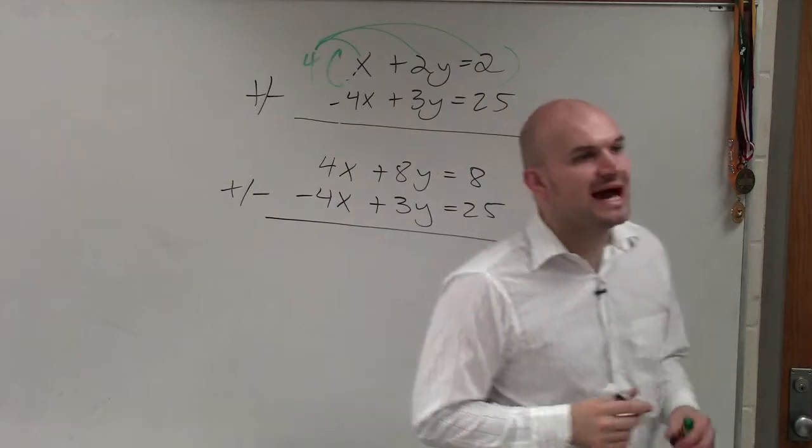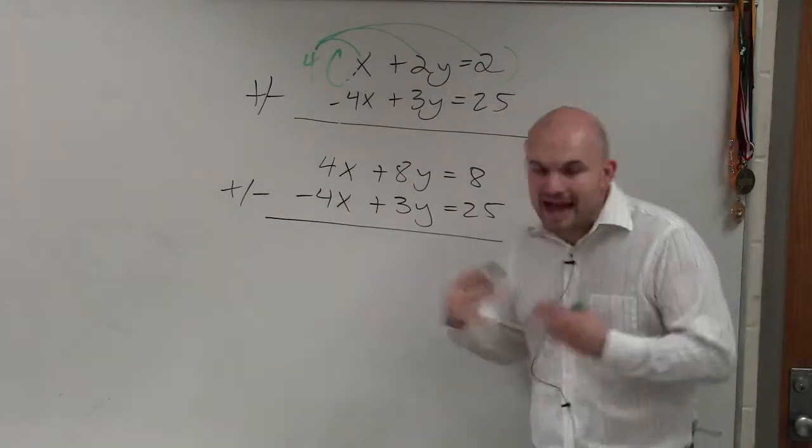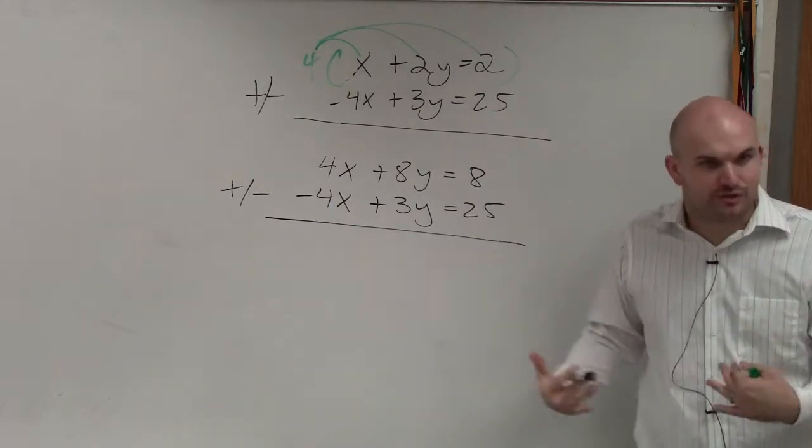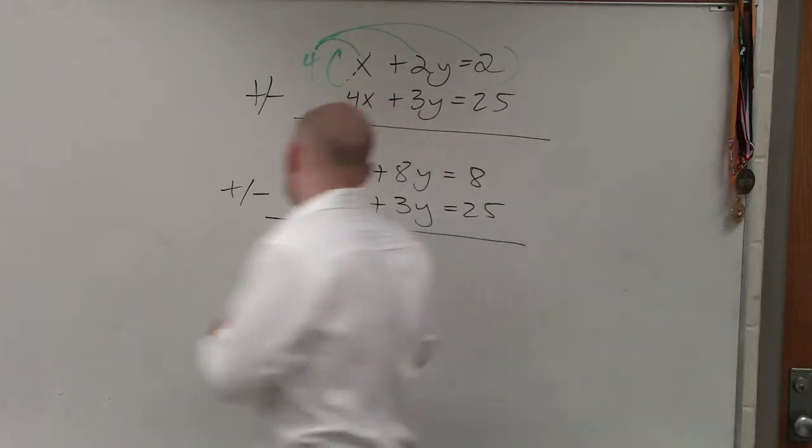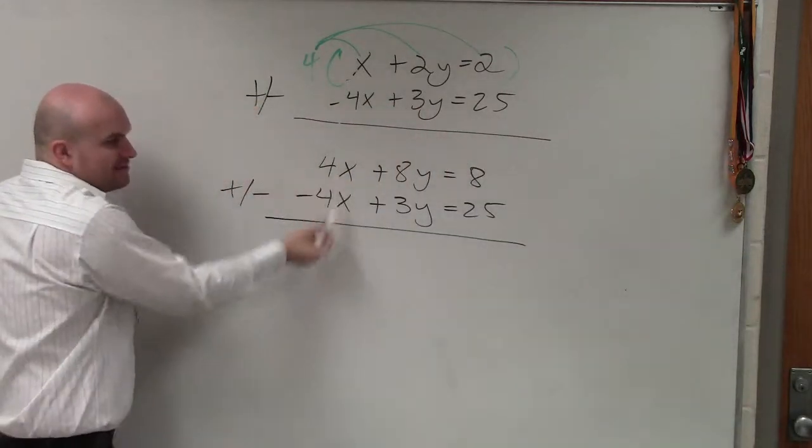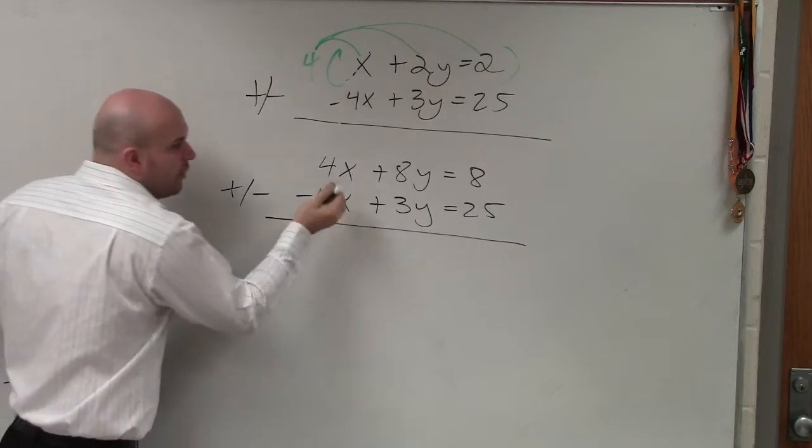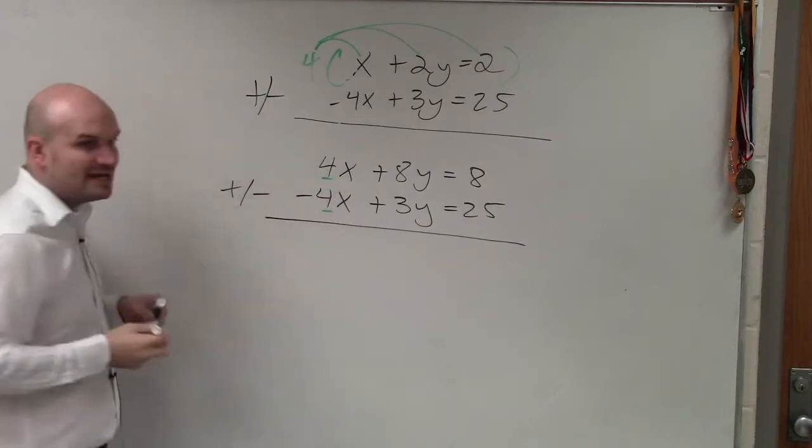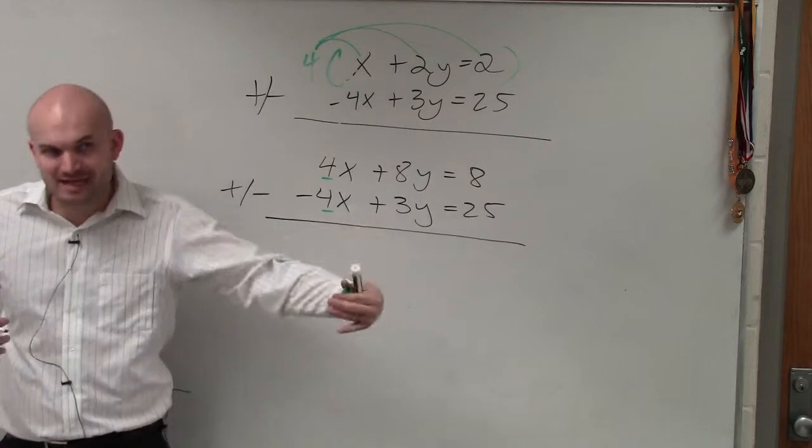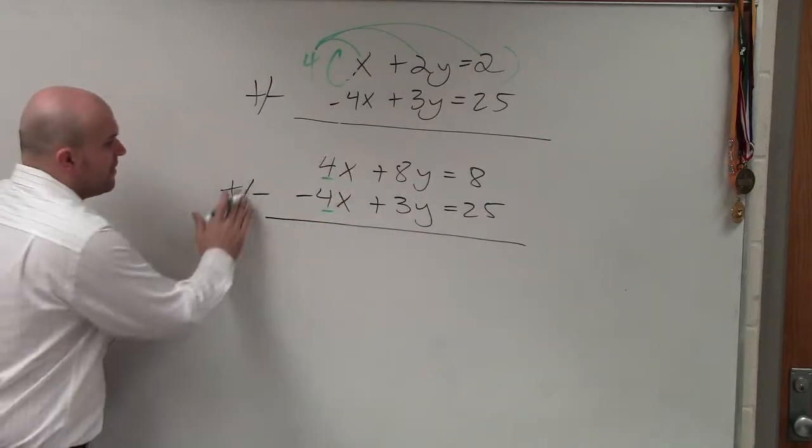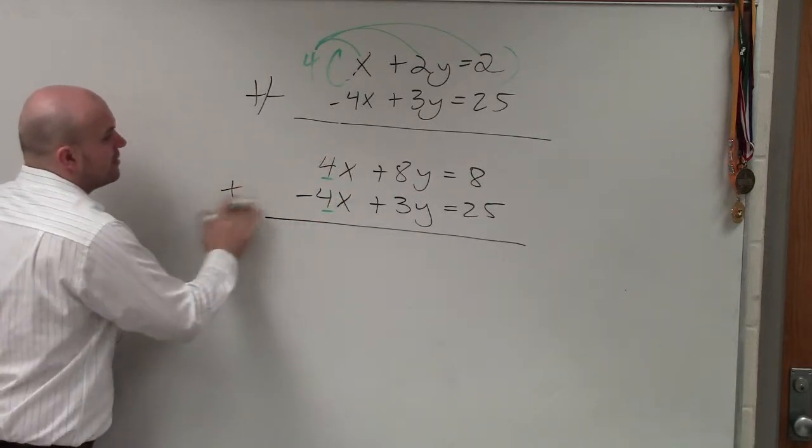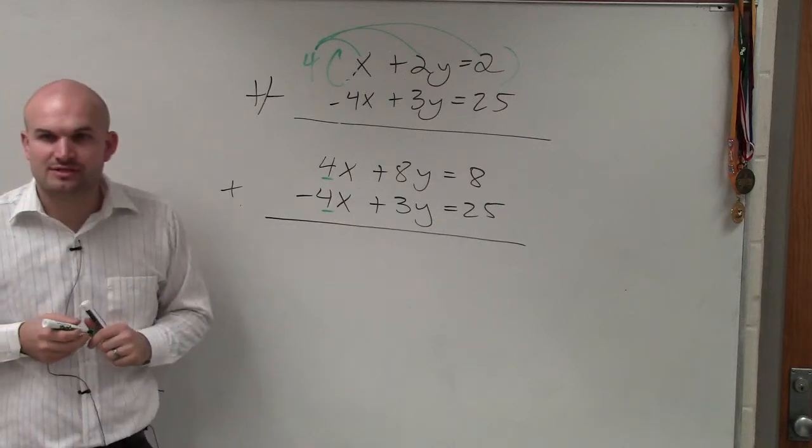Now, again, I need to decide, am I going to add or am I going to subtract the two equations? And as you guys should notice that here, when I multiply by my multiplier, I now have the same coefficient. One is positive and one is negative. So therefore, if I want to eliminate that, if I want to get that to 0, then I'm going to want to add the two equations. Does that make sense?